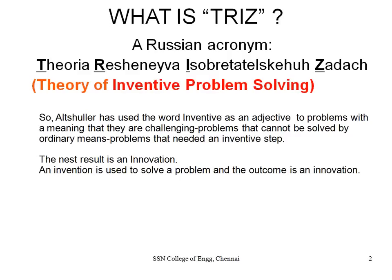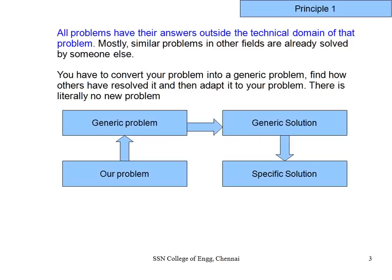If you look at the word TRIZ, this is how it is spelt in Russian: Theoria, Reshynia, Isobretta, Halsho and Zadach. It actually translates as Theory of Inventive Problem Solving. He has used the word 'inventive' as an adjective to the problem — any problem that cannot be solved by ordinary methods requires innovation. I prefer to call it innovative problem solving, where 'innovative' is the adjective applied to the result.